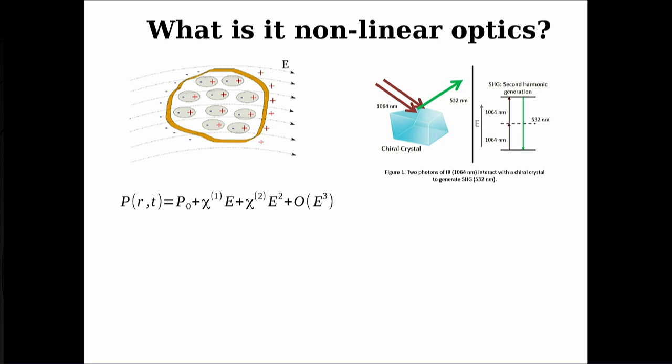This polarization is usually expanded as a power series. I will call the susceptibility chi, because in the nonlinear community it's chi in all books and textbooks. The polarization can be expanded in terms of the total field E. Everything that is linear optics is in the first term, and everything nonlinear is in the terms beyond the first one.